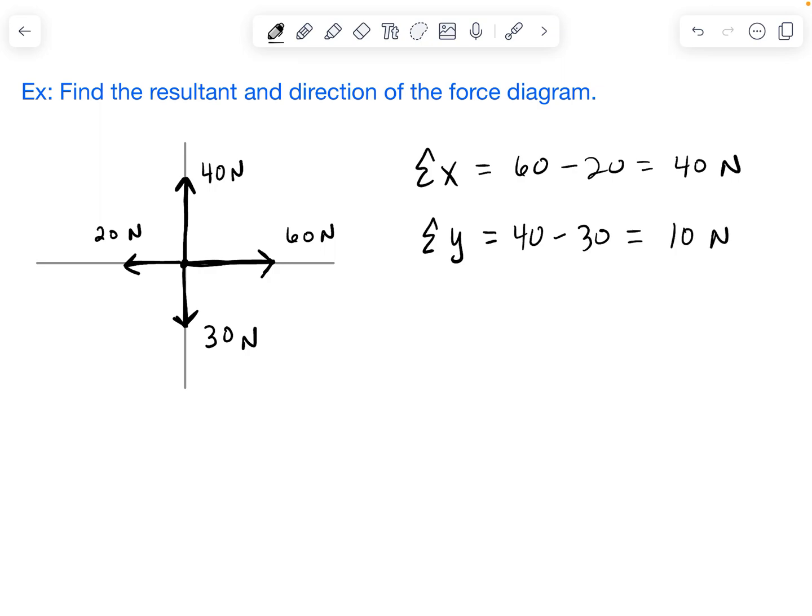All right, so now that we have these values, my total x and my total y, what we can do now is redraw a triangle to find the resultant. So if my total x is 40, like positive 40, we're going to draw a vector to the right.